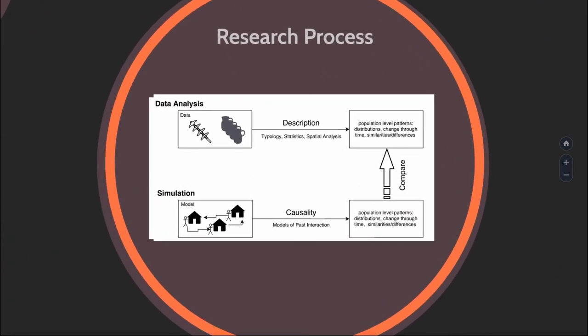When we do data analysis, we have our pots and stone tools and things, and we do a description of it. We use typologies, statistics, spatial analysis—all sorts of things—in order to see the grand population-level patterns, the distribution, the change per time—basically trends in data. When you run a simulation, you build a model where you understand all the interactions, and that model has to produce what we call artificial data. Whoever was in the session, you could see that even 3D models do it—they create this artificial data.